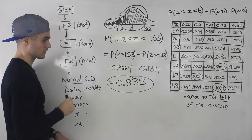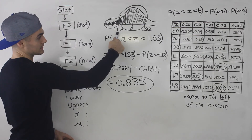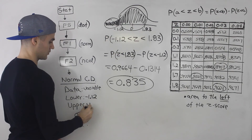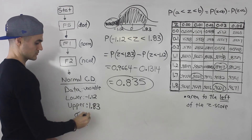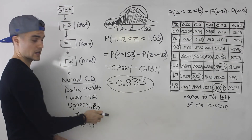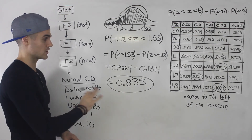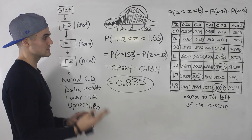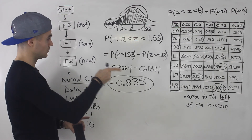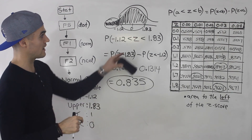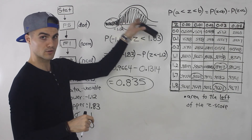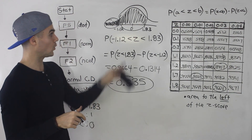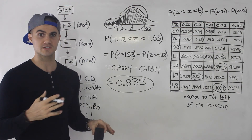Now, what if we use the calculator? It's going to be a lot easier. The lower bound is negative 1.12, the upper bound is 1.83, standard deviation is 1, and mean is 0. If you execute that, you get that answer straight away — no manipulation needed. So those are two different ways — using the table and using the stats calculator — to find the area under the curve for specific z-scores: to the left, to the right, or even between z-scores.